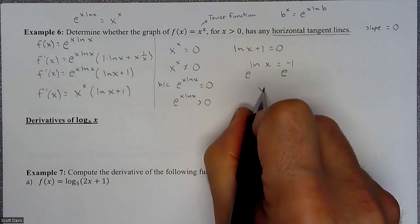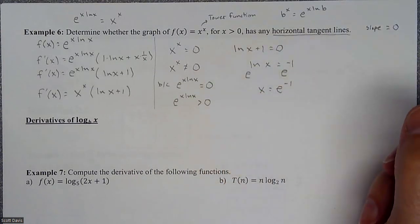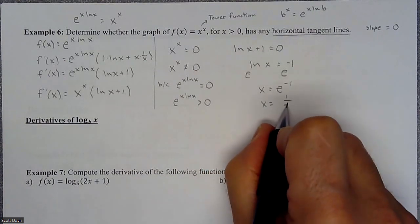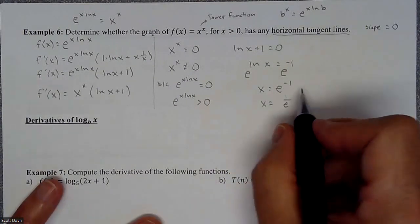And so this just becomes x equals e to the negative one, which maybe a little bit better way to write that is bring that negative, move the negative exponent, bring it down. And that's it.